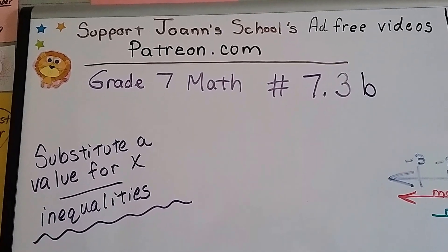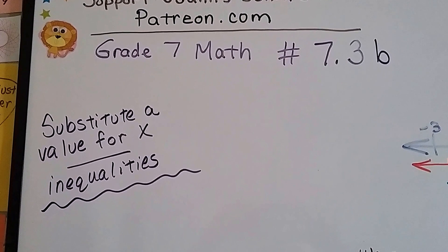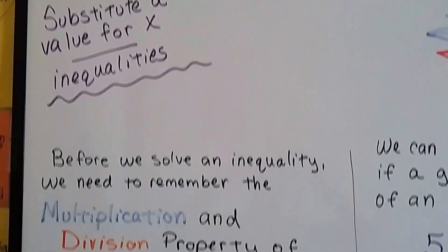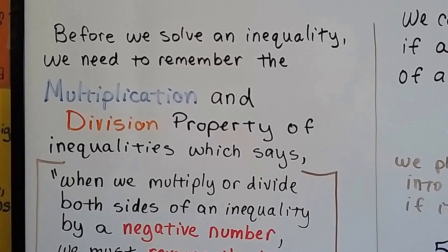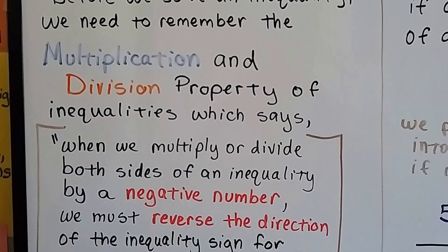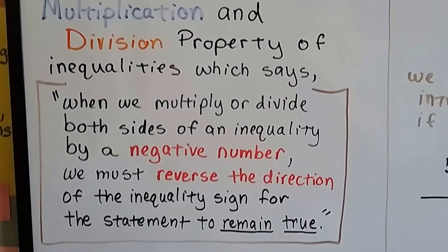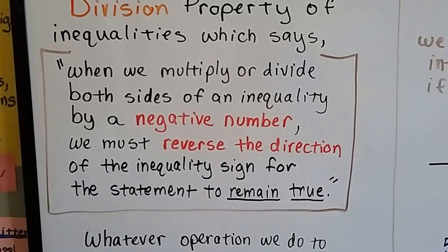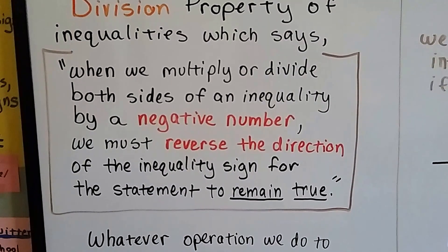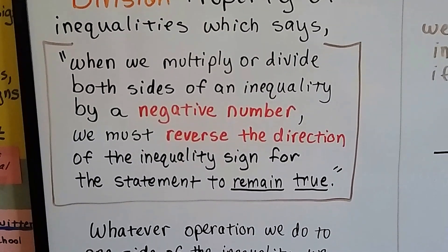Grade 7 math number 73 point B: substitute a value for X in inequalities. Before we solve an inequality we need to remember the multiplication and division property of inequalities, which says that when we multiply or divide both sides of an inequality by a negative number, we must reverse the direction of the inequality sign for the statement to remain true.